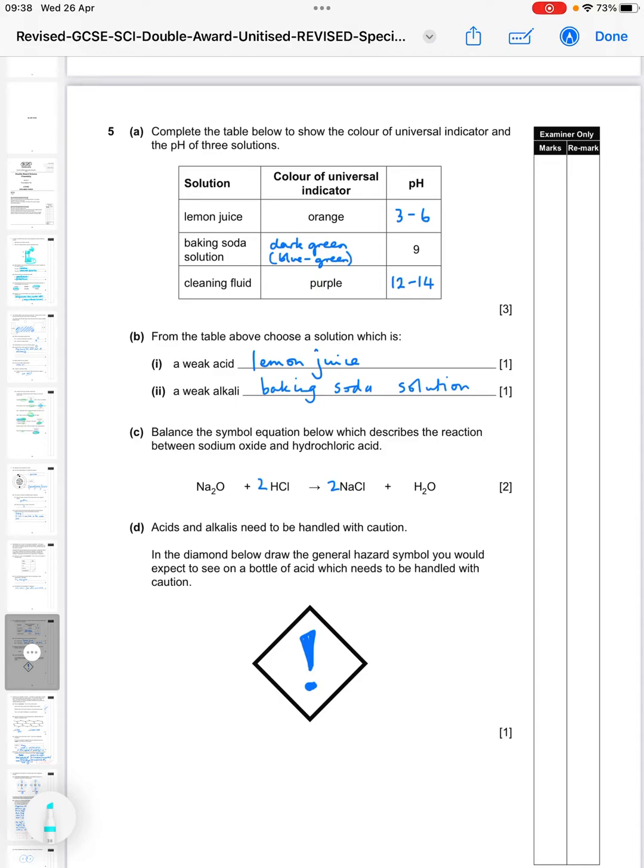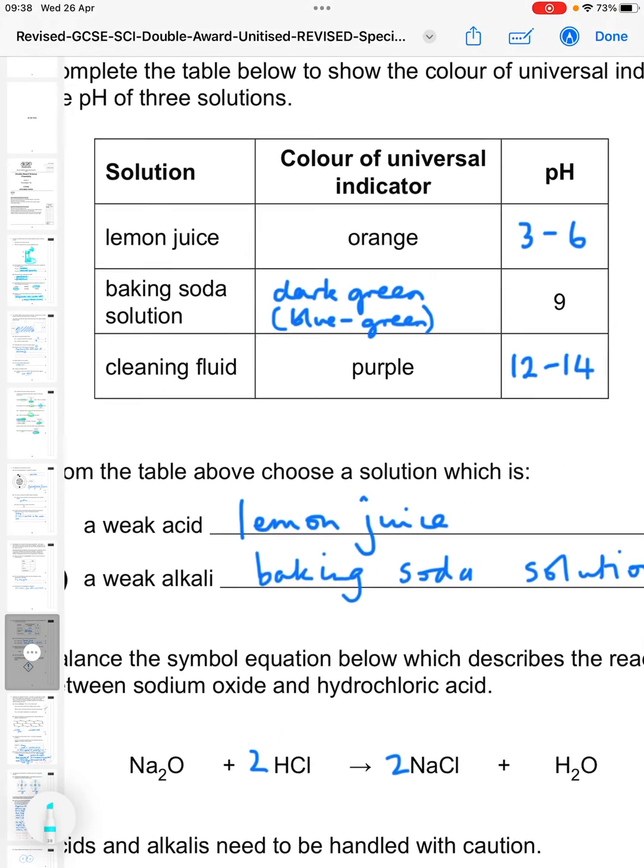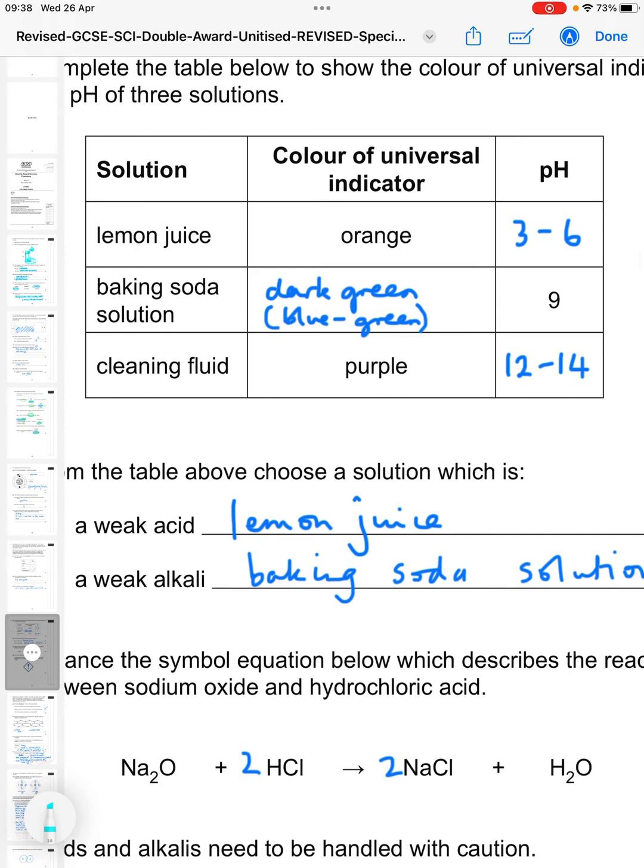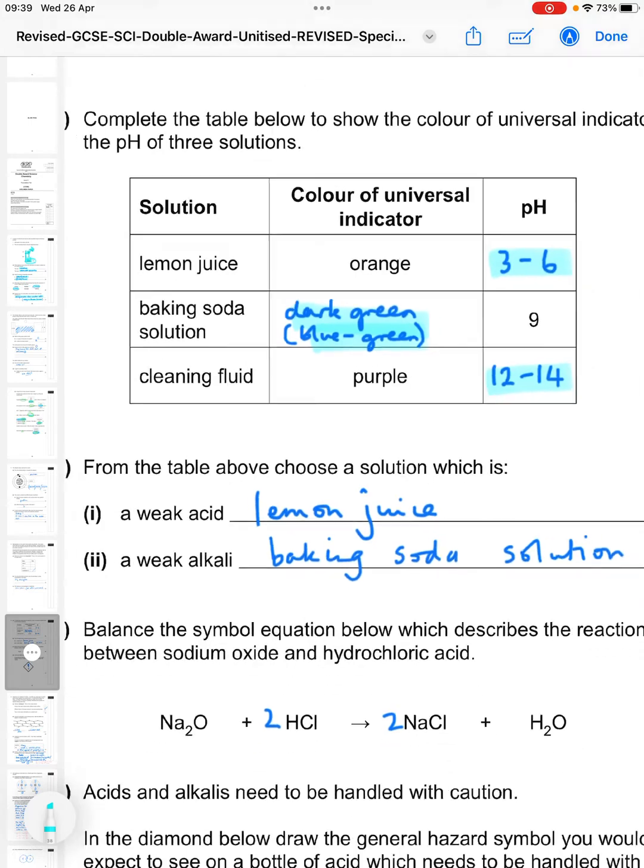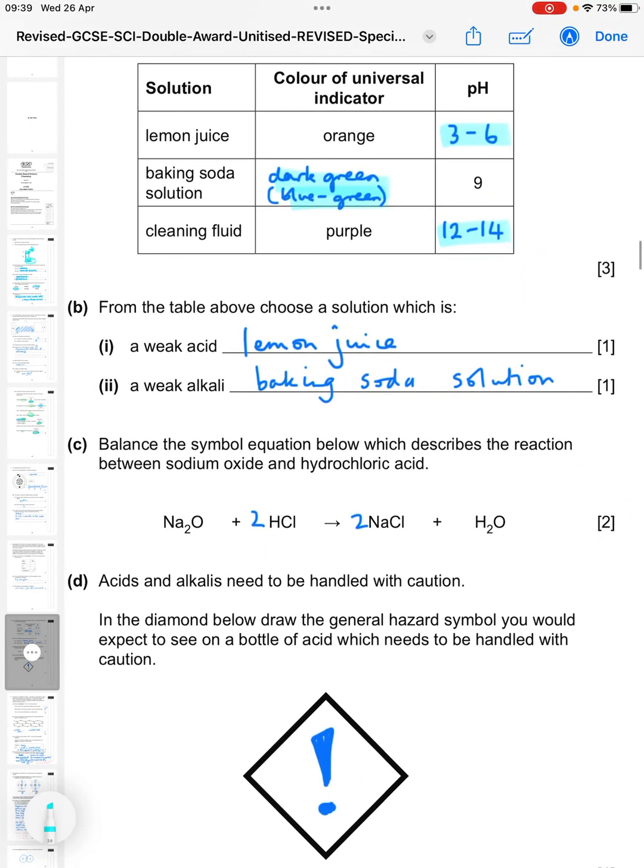Number five, complete the table to show the color of universal indicator and the pH of three solutions. So we've got lemon juice, baking soda solution and cleaning fluid. The color of the lemon juice would be orange, that's given. And then baking soda, the mark scheme is saying dark green or blue green. And then the pH is lemon juice between 3 and 6, and the cleaning fluid between 12 and 14 for that purple color. So from the table above choose a solution which is a weak acid - so that's lemon juice. Then a weak alkali would be the baking soda solution.